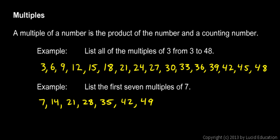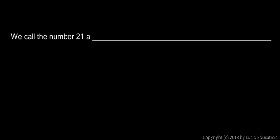the multiples of 3 and the multiples of 7. The number 21 is in both lists. 21 is a multiple of 3 and it's also a multiple of 7. We call the number 21 a common multiple of 3 and